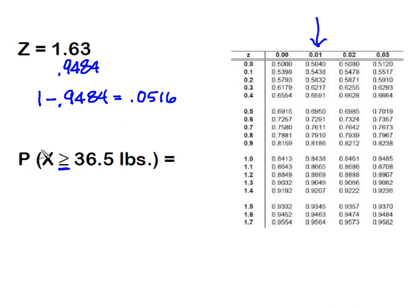So we can say that the probability that a randomly selected bulldog puppy weighs 36 and a half pounds or more is going to be roughly 5.16 percent.